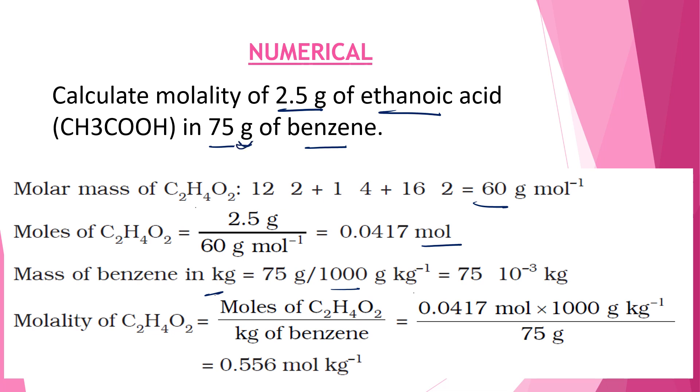It has to be converted into kg, so 75 times 10 to the power minus 3 kg. Molality of C2H4O2 equals moles of C2H4O2 divided by mass of solvent in kg, which is equal to 0.0417 moles times 1000 divided by 75 grams, which comes out to be 0.556 moles per kg molality, or simply we can write as 0.556 small m.